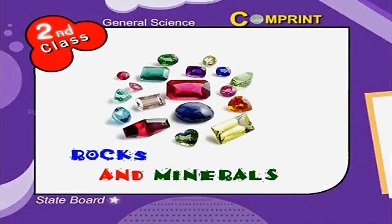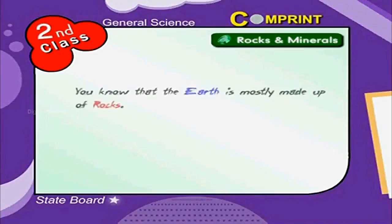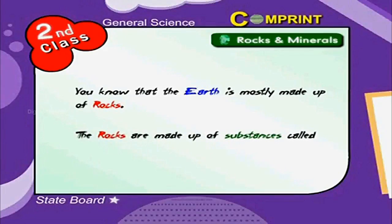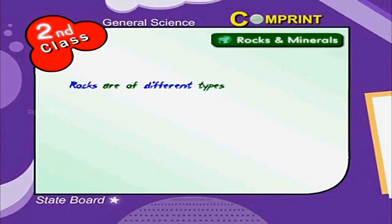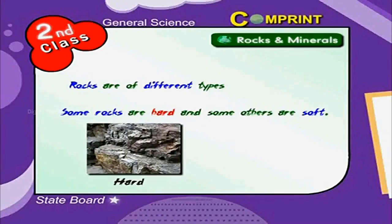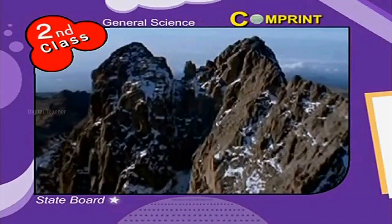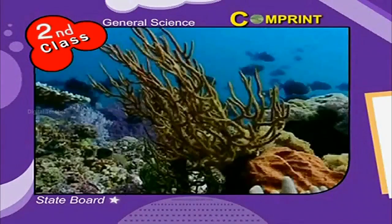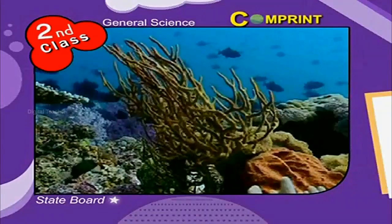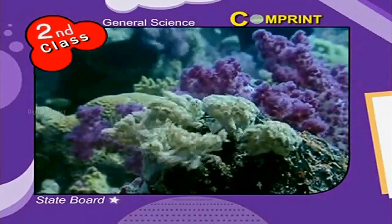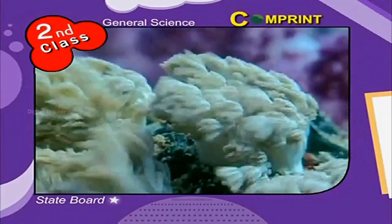Rocks and Minerals. You know that the earth is mostly made up of rocks. The rocks are made up of substances called minerals. Rocks are of different types. Some rocks are hard and some others are soft. They are found on the mountains, hills, valleys, under the rivers and seas. Hence, they are of different shapes, sizes and colors.